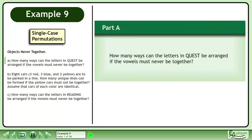In this example, we will solve permutations where objects are never together. In Part A, how many ways can the letters in QUEST be arranged if the vowels must never be together?